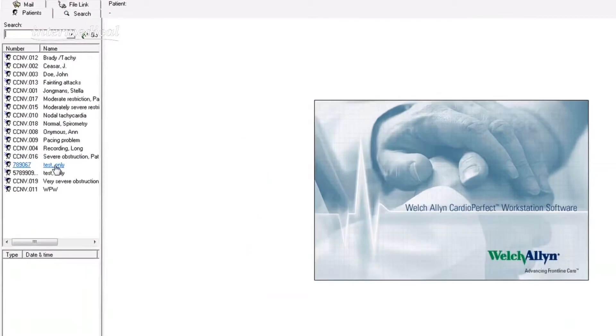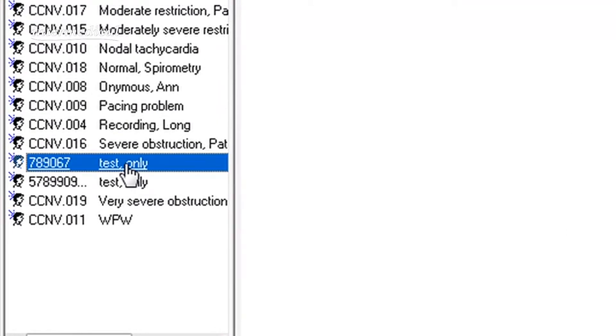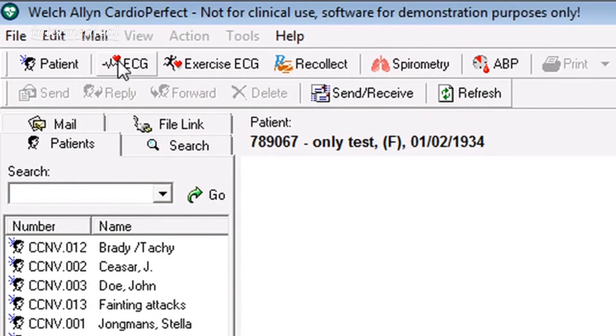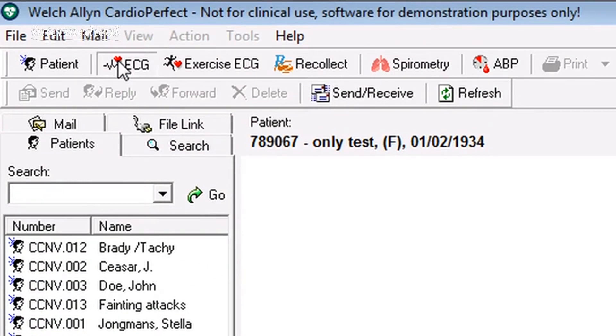So that's the resting ECG. But what if you want to take a longer ECG, a rhythm ECG? Well, for this, you need to go back into the software and again, either input or find your patient, highlight their name, and again click on the ECG icon at the top of the screen.